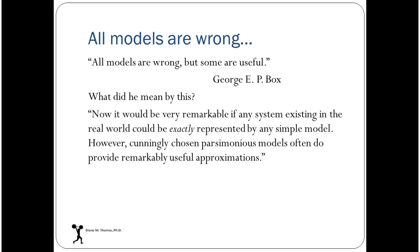There's plenty on George Box on Wikipedia. If you read a little bit about what he meant by the statement, he says: 'Now it would be very remarkable if any system existing in the real world could be exactly represented by any simple model. However, cunningly chosen parsimonious models often do provide remarkably useful approximations.' So what he meant was that all models are essentially approximations of the real world, and some of those approximations are useful because they give us insight about the real world.